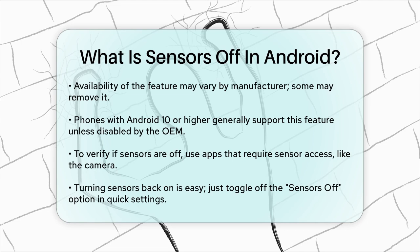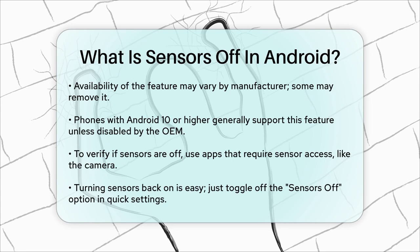To check if the sensors are off, you can try using an app that requires sensor access, like the camera or a compass app. If these apps can't function, it's a good sign that the sensors are indeed turned off.